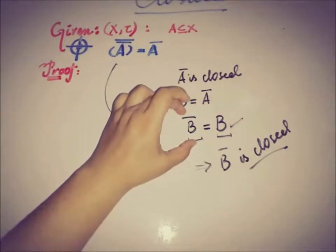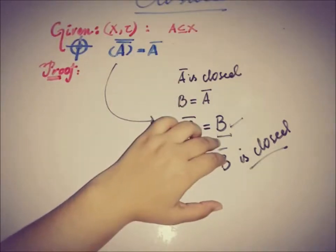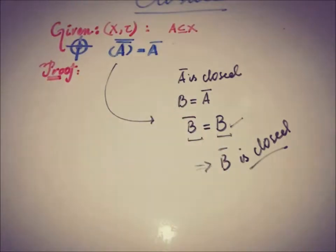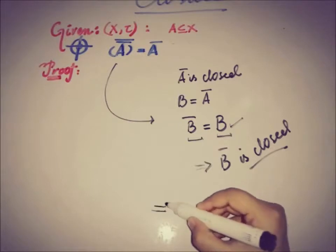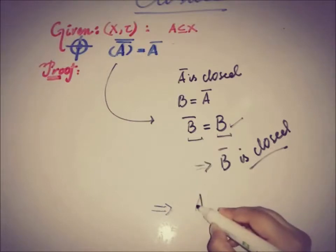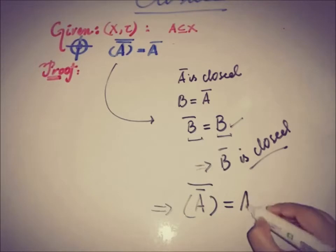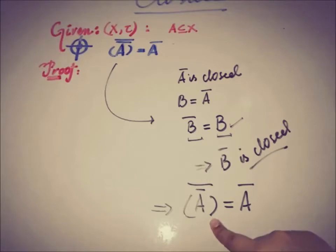So we can rewrite this in the A form, that is A closure is equal to A closure. So the closure of a closed set is equal to the closure of a set or closed set.